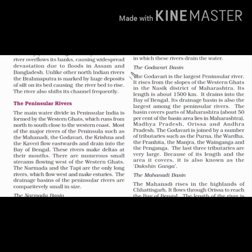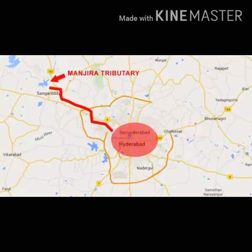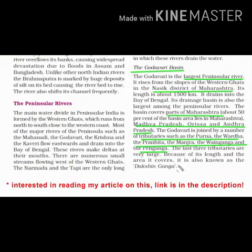Now we will read about the rivers going towards the eastern side. First, the Godavari Basin. In the peninsular region, the Godavari is the largest river. It starts from Western Ghats in the Nasik district of Maharashtra, then goes to Madhya Pradesh, then Orissa and Andhra Pradesh. Some small tributaries of Godavari include the Purna, the Wardha, the Pranhita, the Manjira, the Wainganga, and the Penganga. A quick fact: the city of Hyderabad gets drinking water from the Manjira river, though currently this tributary has dried up and the state government is creating a new water channel to deliver water to the city. The other name given to Godavari is Dakshin Ganga.